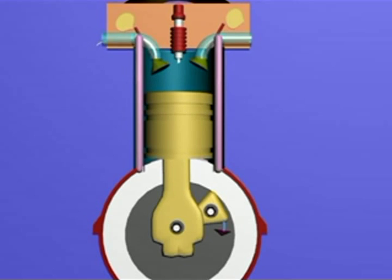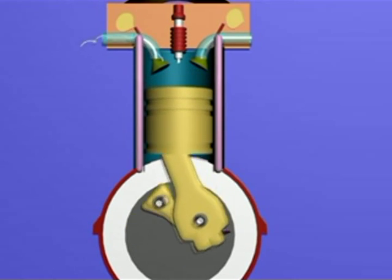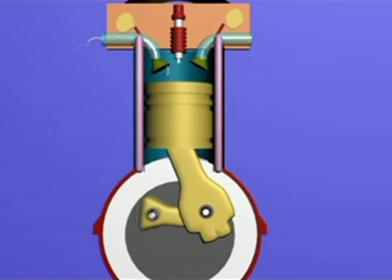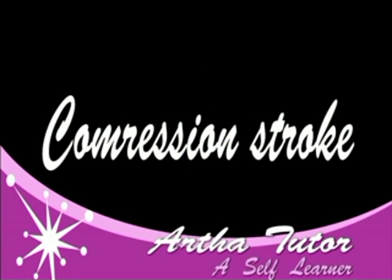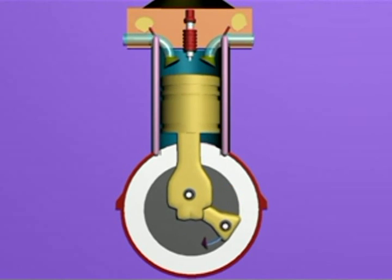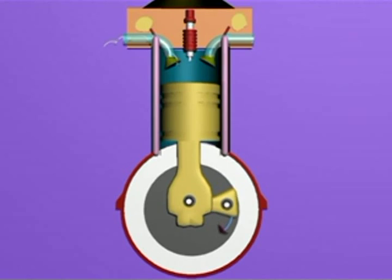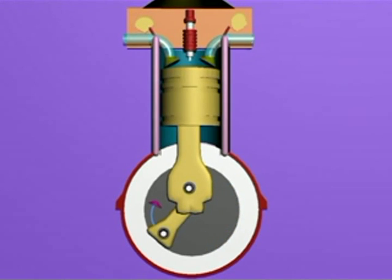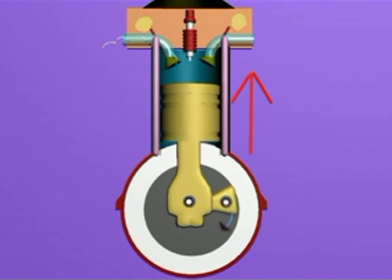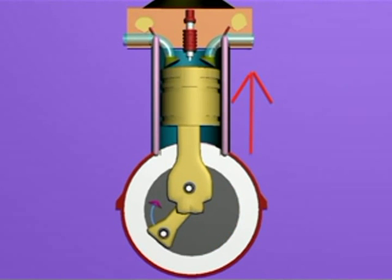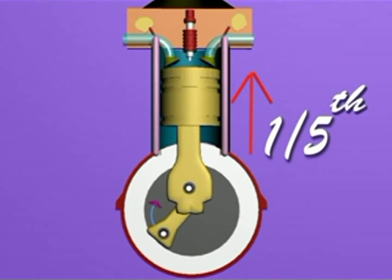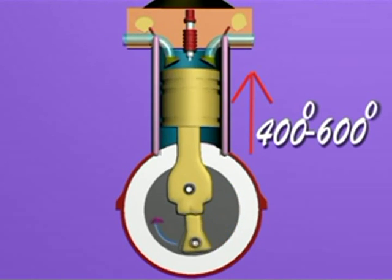Intake stroke: The piston moves downwards creating a low pressure inside the cylinder, then the inlet valve opens and the fuel mixture from the carburetor enters the cylinder. The outlet valve remains closed. Compression stroke: The piston moves upwards. Both the inlet valve and outlet valve get closed and the fuel mixture is compressed, raising the temperature and pressure up to 400 to 600 degrees centigrade and compressing to 1/5th of initial volume.